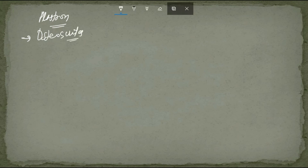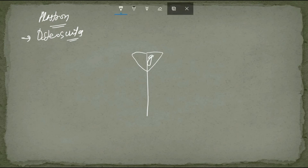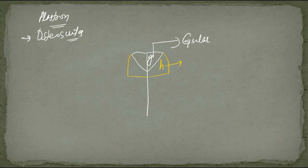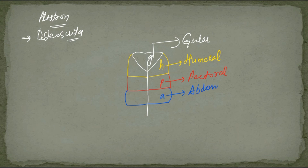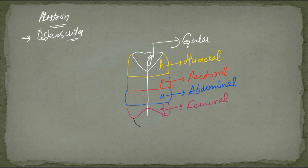The plastron of the turtle consists of the following osteocutes from front to back: the gular, then the humeral osteocute, then the pectoral osteocute, then the abdominal osteocute, then the femoral osteocute, and finally the anal osteocute.